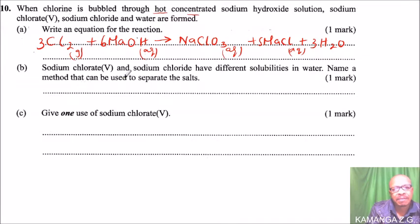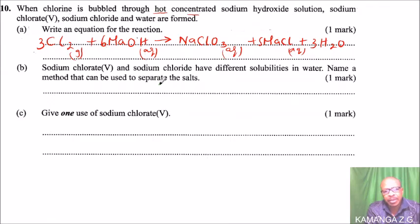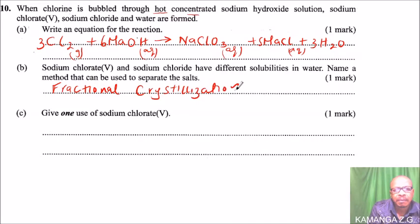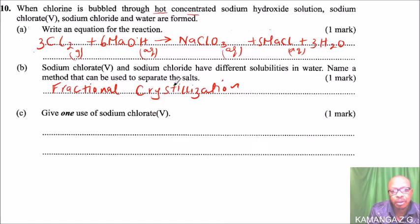Part B: sodium chlorate and sodium chloride have different solubilities in water. Name a method that can be used to separate them. Salts that have different solubilities can be separated by a method known as fractional crystallization.